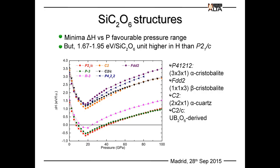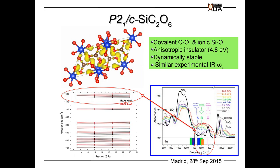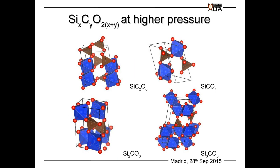The SiC2O6 structure is a semiconductor and is dynamically stable (no imaginary phonon frequencies). At higher pressure, a symmetrization transition occurs involving the displacement of silicon atoms from the centers of faces to the midpoints of edges. The preferred structure at high pressure, though not thermodynamically stable, contains octahedral silicon coordination and tetrahedral carbon coordination. Carbon adopts tetrahedral coordination at those conditions.